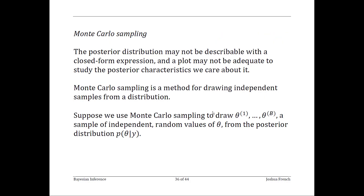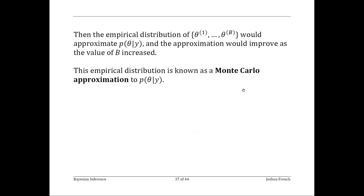Another way to summarize the posterior distribution is to draw independent samples from it, which is known as Monte Carlo sampling. Let theta 1 through theta B be i.i.d. samples of the parameter from the posterior distribution. The empirical distribution of the Monte Carlo sample will approximate the true posterior distribution, P of theta given y — this is known as the Monte Carlo approximation to the posterior distribution. This approach is most effective when you don't know the posterior distribution in closed form, but you can still draw a Monte Carlo sample from it.